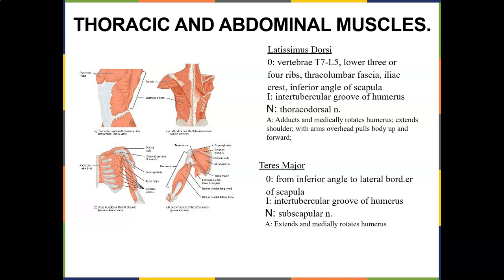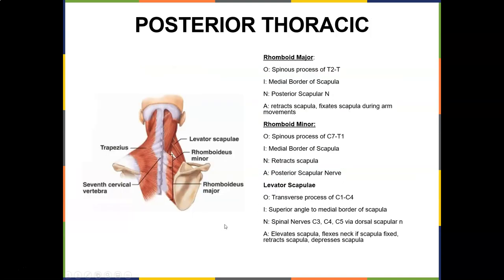Teres major forms the inferior angle to the lateral border of the scapula and inserts on the intertubercular groove — same insertion as the lats. The nerve is the subscapular nerve. Teres major extends and medially rotates the humerus, very similar to what the lats do.